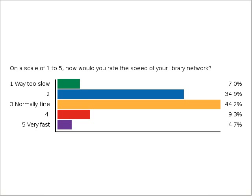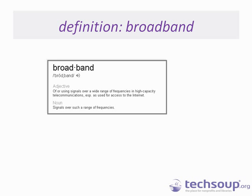Kieran explains that broadband refers to a wide range of frequencies — think of it like a freeway versus a one-lane road. Broadband means there's space for more than one thing to happen at a time, like a truck in one lane and a car in another. Bandwidth is different: it adds a dimension of time — not how many lanes there are, but how fast you can get from Denver to Colorado Springs.